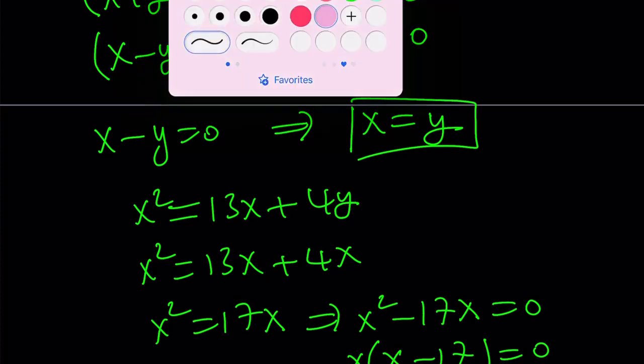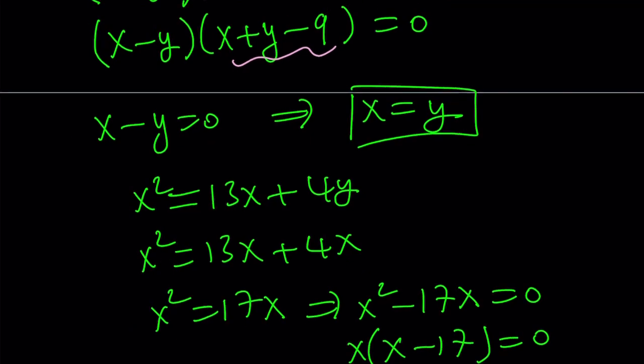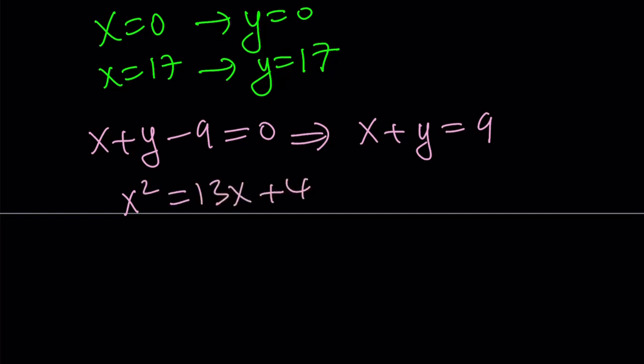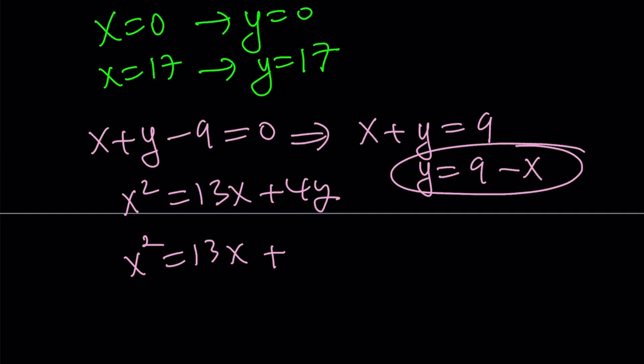We also have x plus y minus 9 equal to 0, which indicates the following. x plus y minus 9 equals 0 means x plus y is equal to 9. Cool. How am I going to use this information? Let's go ahead and rewrite the equations. How about the first one only? I keep using the first one. You can replace y with 9 minus x. Yay. I can use substitution one more time. This is really cool. Now, replace y with that.